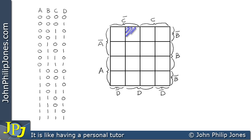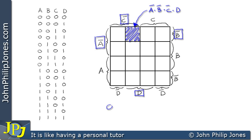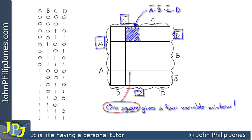Let's consider this shaded area. What does it represent? Well we can see it's in the not A area, it's in the not B, the not C and the D area. Consequently, this square can be represented by not A and not B and not C and D. Now, it's important to realise that if we have one square, it gives a four-variable min term. For example, if we consider this one square, we can see that that is here — there is our one square — and I'm saying that it gives us a four-variable min term. So we can see one square gives us a four-variable min term.